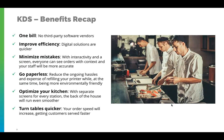Let's do a quick benefits recap. This is a one-bill option — no third-party software vendors needed, as everything is done in-house through NCR Silver. We're helping kitchen staff improve efficiency, as digital solutions are quicker. We minimize mistakes so everyone can see the order in context, and staff information will be more accurate. You're also implementing a greener footprint — go paperless and reduce the ongoing hassle and expense of refilling ink and paper. Finally, this optimizes your kitchen with separate screens for each station, helping you turn tables quicker.